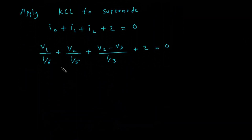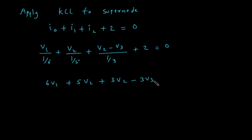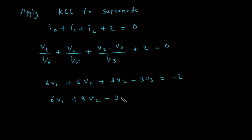So this will be 6V1 plus 5V2 plus 3V2 minus 3V3 plus 2 equals 0. We can further simplify this: 6V1 plus 8V2 minus 3V3 equals minus 2. Let's call this equation A.